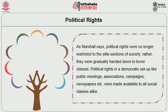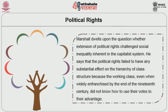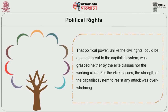Political rights in a democratic setup, like public meetings, associations, campaigns, newspapers, etc., were made available to all social classes alike. Marshall dwells upon the question whether extension of political rights challenged social inequality inherent in the capitalist system. He says that political rights failed to have any substantial effect on the hierarchy of class structure because the working class, even when widely enfranchised by the end of the 19th century, did not know how to use their votes to their advantage. That political power, unlike civil rights, could be a potent threat to the capitalist system was grasped neither by the elite classes nor the working classes.